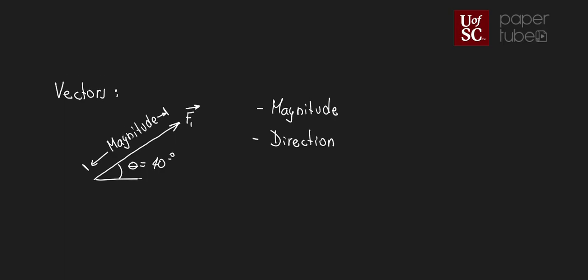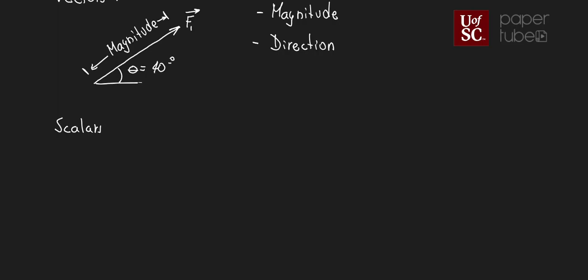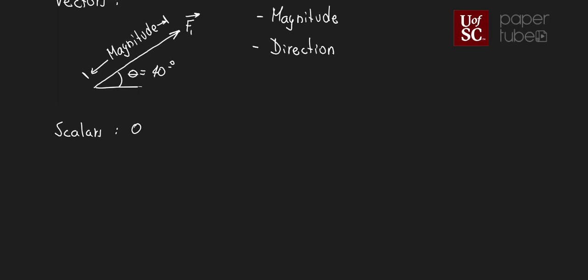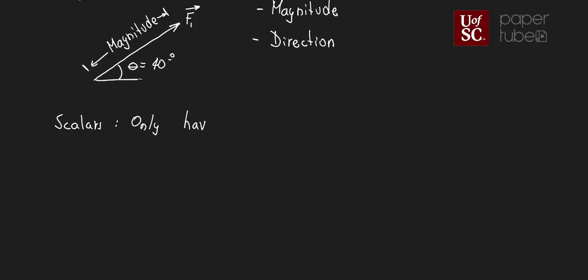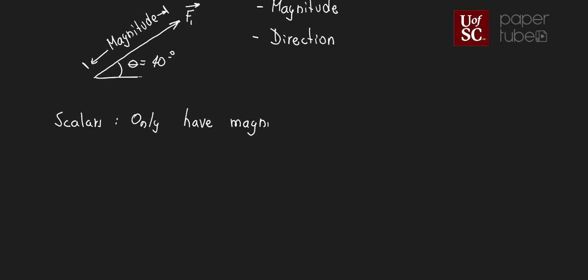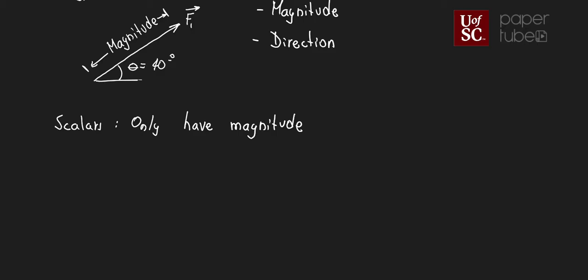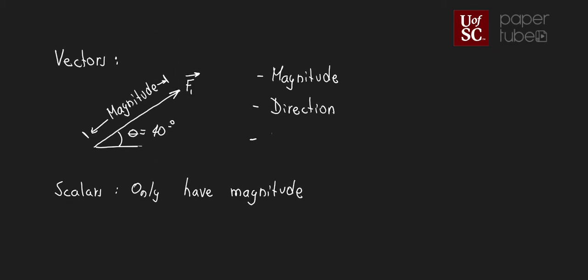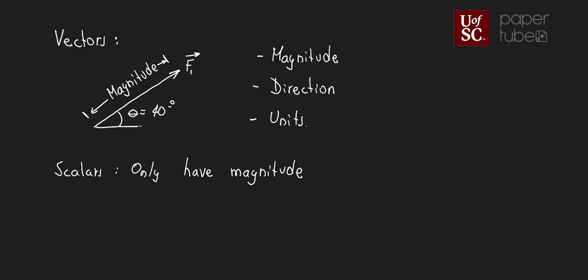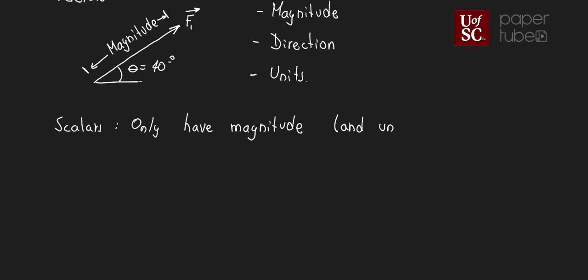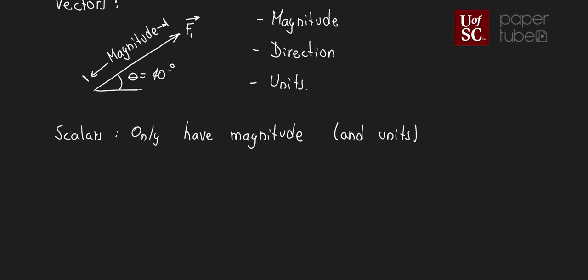Scalars, on the other hand, are going to only have a magnitude. One thing we often forget is units — both vectors and scalars have units. So vectors have magnitude, direction, and in most cases units, with a few exceptions. Scalars also have units, just magnitude and units. This is particularly important when we're looking at engineering solutions and statics.